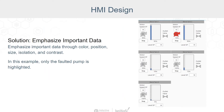When a user first sees a screen, the last thing they want is to be looking around searching for important information. So if you're using color, size, position, isolation, and contrast, you can emphasize what's important quickly, alleviating any confusion. In this example, only the faulted pump is highlighted, and this immediately draws your eye.